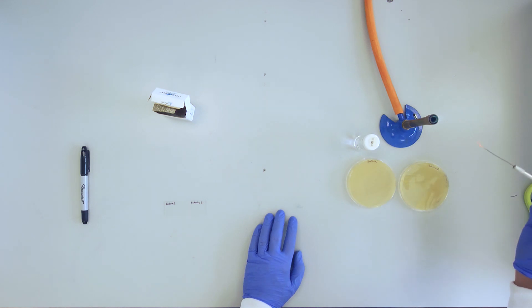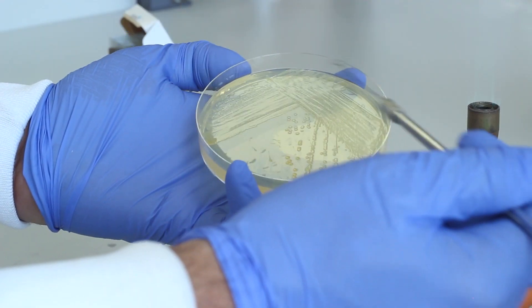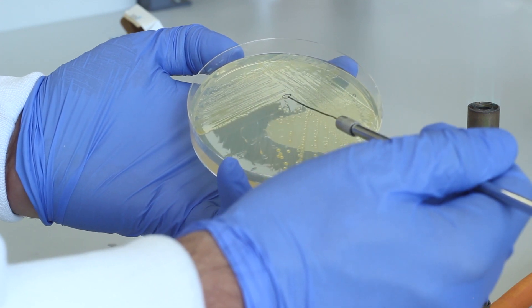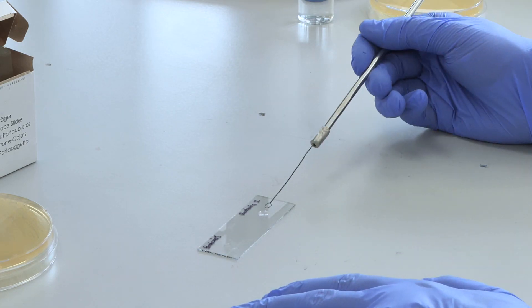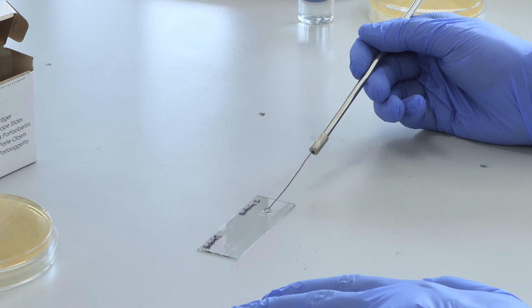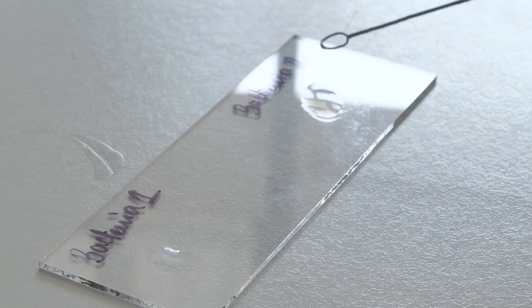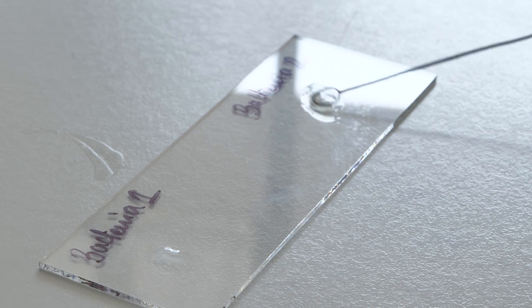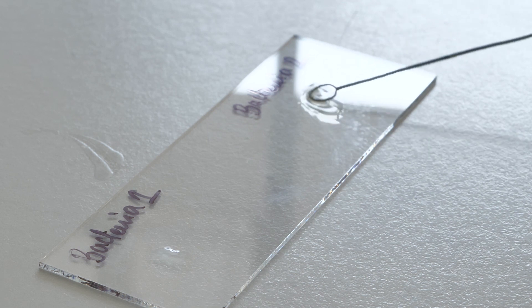Repeat the procedure for the second bacterium. A negative KOH test should be recorded if the mixture becomes cloudy but has no stringiness. This result is indicative of a gram-positive bacterium.